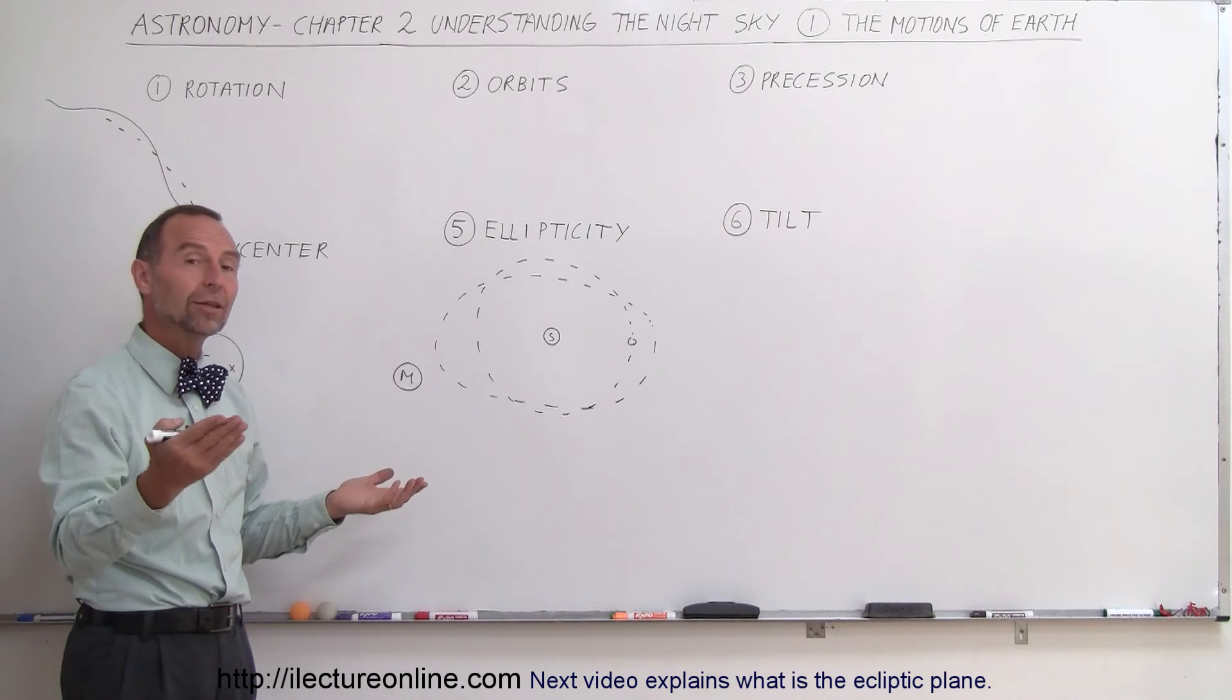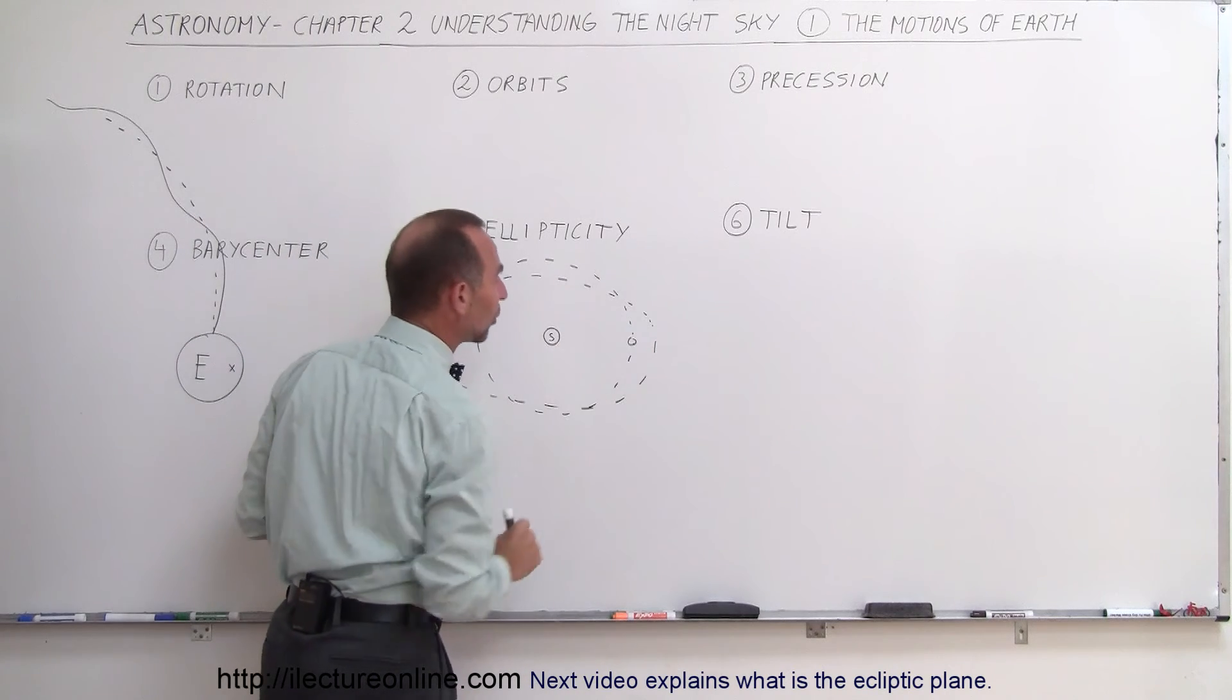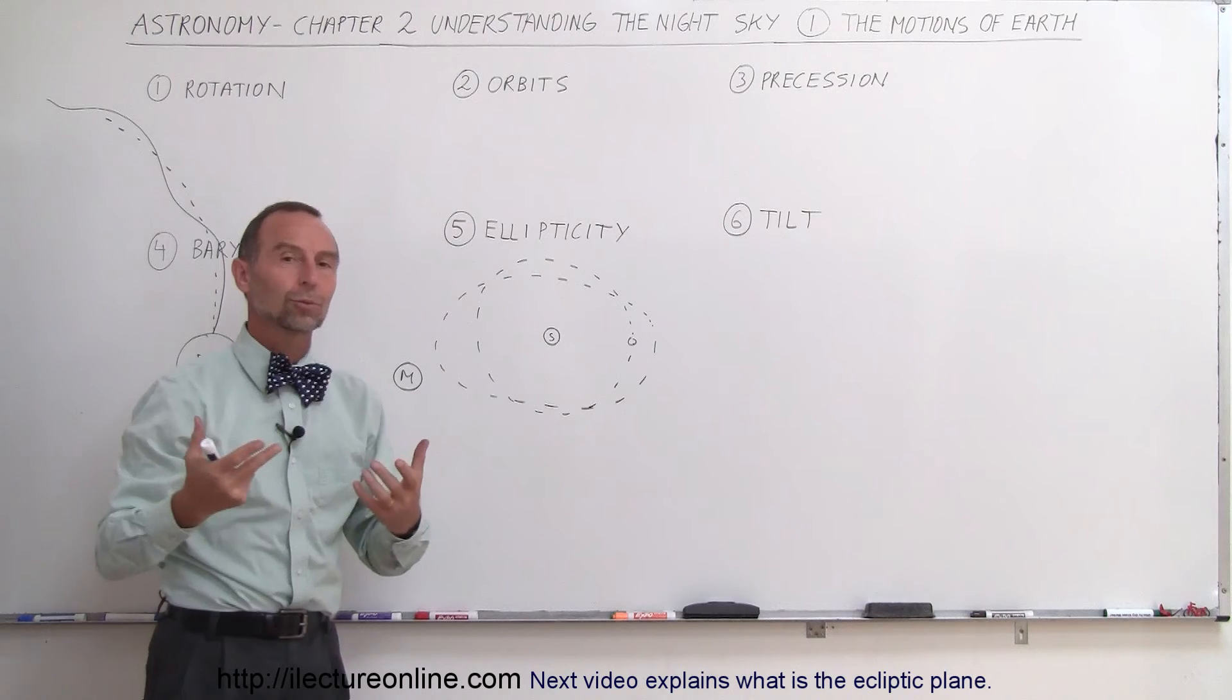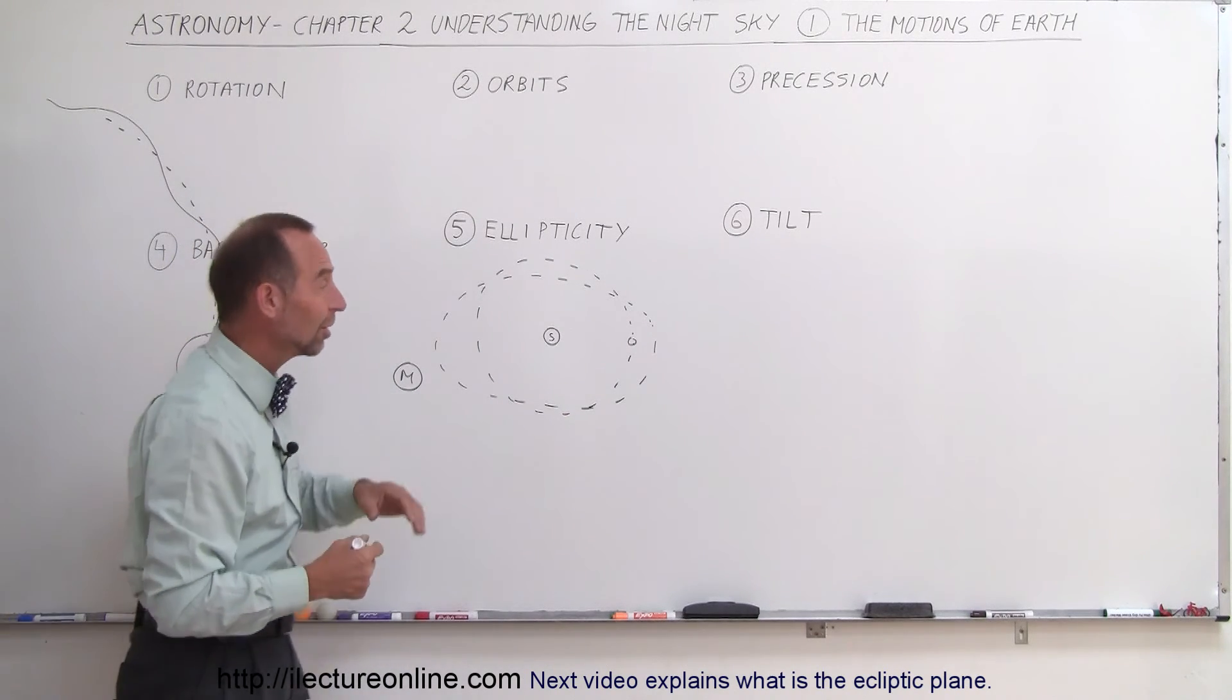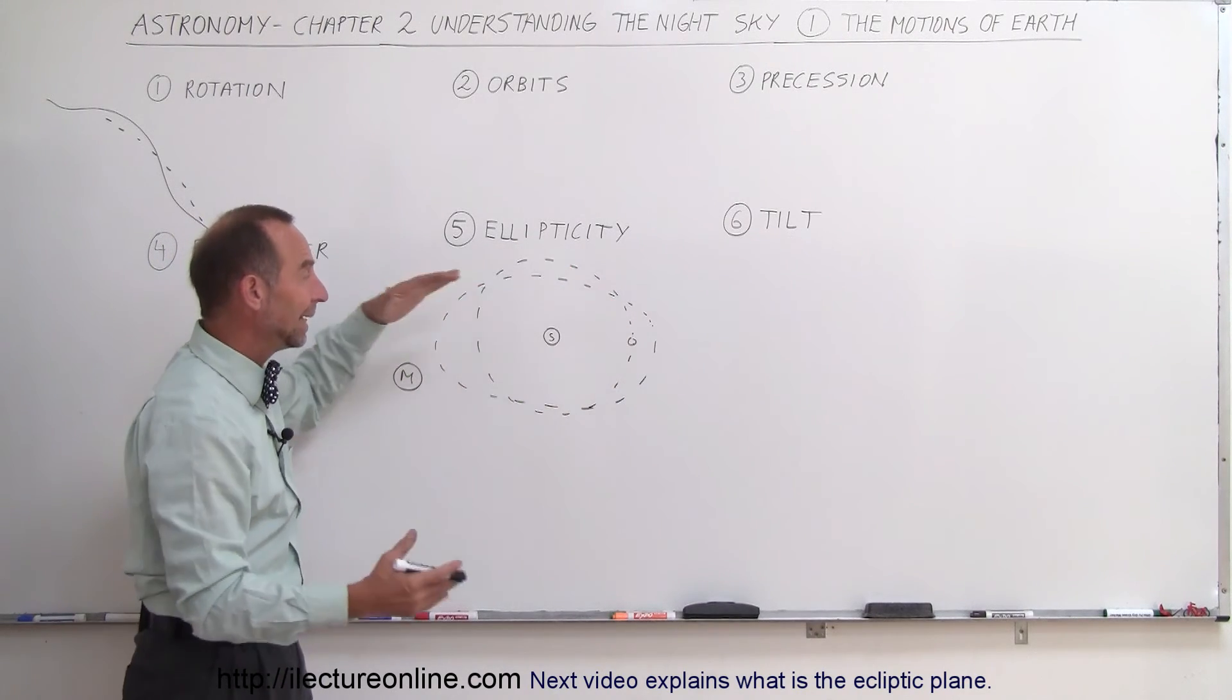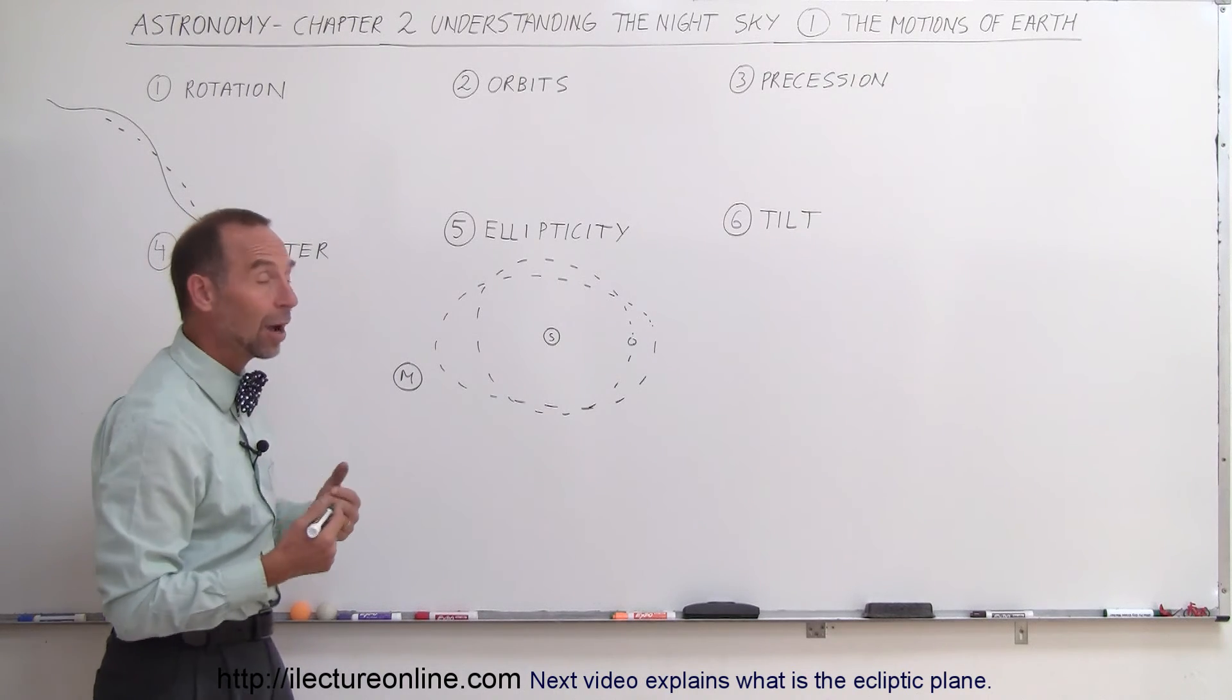Every hundred thousand years or so the Earth plunges into an Ice Age. That happens when the Earth has a much more elliptical orbit and when the Earth has a much more circular orbit the Earth will then come out of its Ice Age and have kind of a nice warm period for about five or ten thousand years and then back into an Ice Age. So definitely the motion of the Earth in the change in the ellipticity is definitely a big factor in how we live on the Earth.